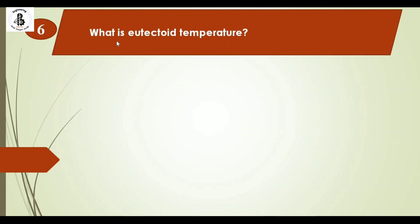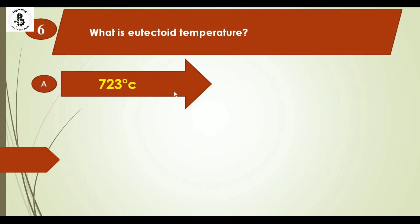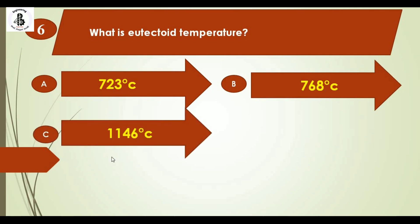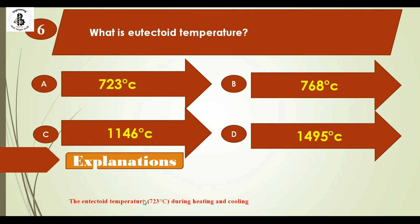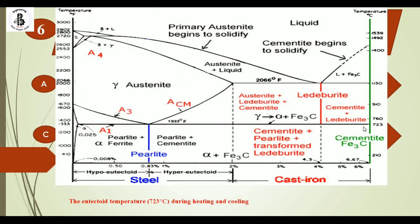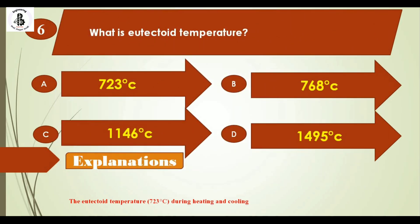Question 6: What is the eutectoid temperature? Option A: 723°C, Option B: 768°C, Option C: 1146°C, Option D: 1495°C. The eutectoid temperature is around 723°C for both heating and cooling. For the iron-carbon diagram, this occurs at 0.8% carbon and approximately 723°C — this is the eutectoid point and 723°C is the eutectoid temperature. The right answer is option A.